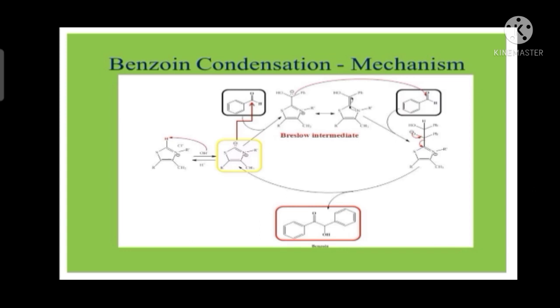That carbanion will attack the carbonyl carbon of the benzaldehyde and it will form this sort of complex. Here some steps are missing like the formation of OH and the removal of H, after which it will form a carbanion. Once it forms a carbanion, it will attack at the carbonyl carbon of another benzaldehyde and hence it will form this complex. In this complex one negative charge is present in oxygen, but we know that it cannot sustain a negative charge, so it will revert back and the thiamine part will be removed from the product. Finally we will get the benzoin as our final product. This is the mechanism of the benzoin condensation.